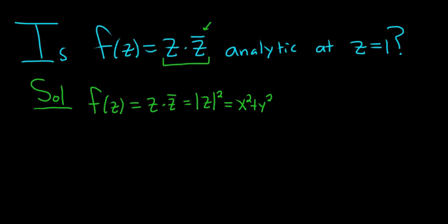And say, what is going on? Well, remember, z is x plus iy. And the conjugate of z is x minus iy. So if you multiply this out, you end up with x squared plus y squared.